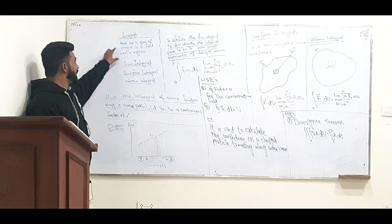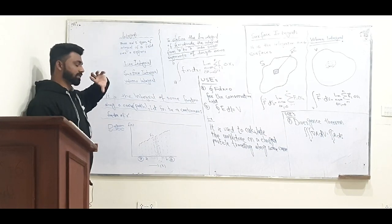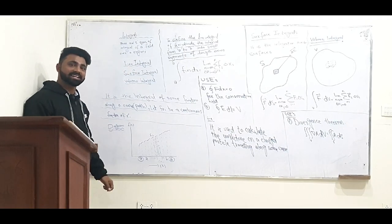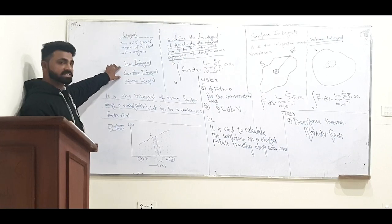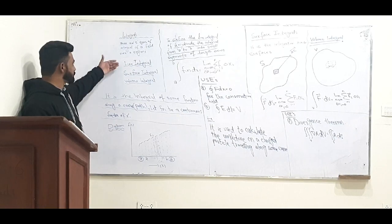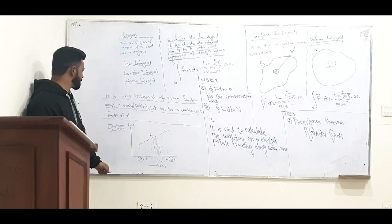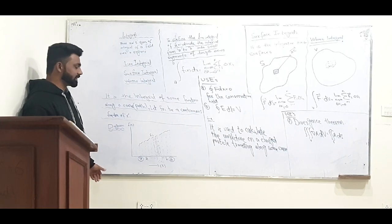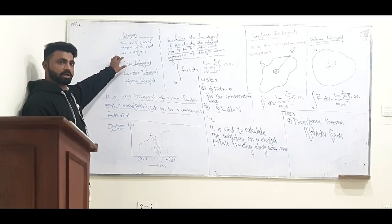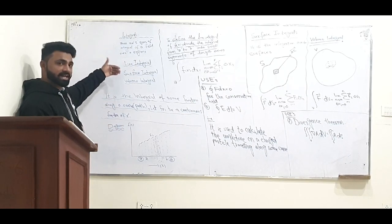To define the integral, let's say we have a vector field and we want to find out the value of the line integral, surface integral, and volume integral. First of all, we see what is the line integral. As it is known from its name — the line, or a path, or a curve — and we are going to find the integral along it.